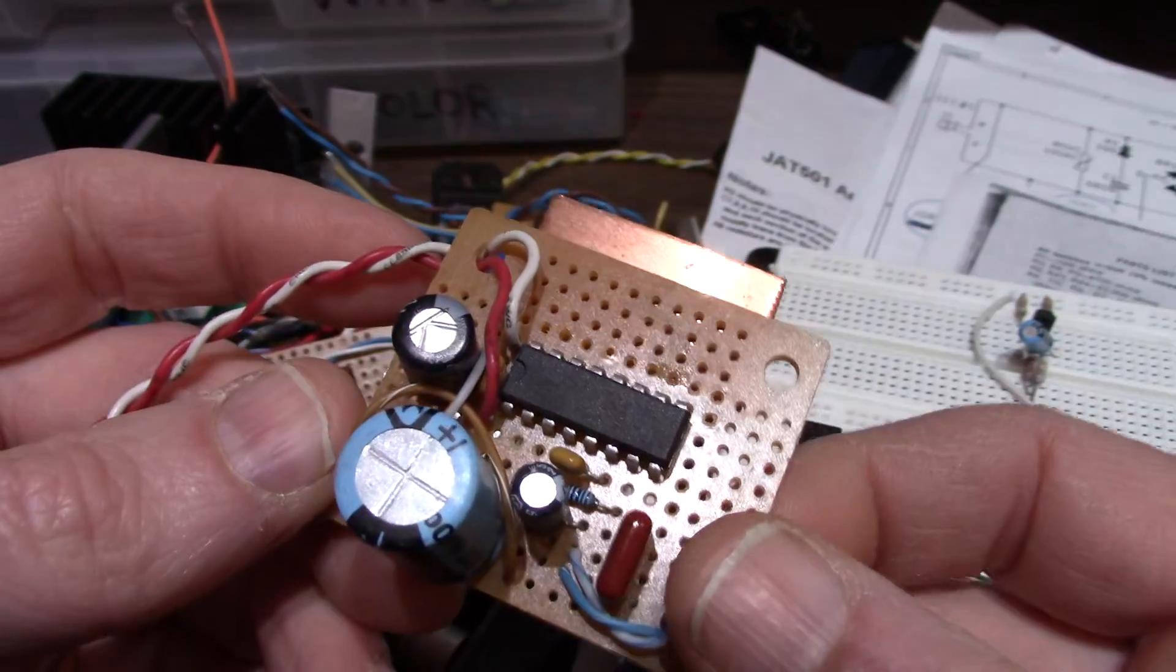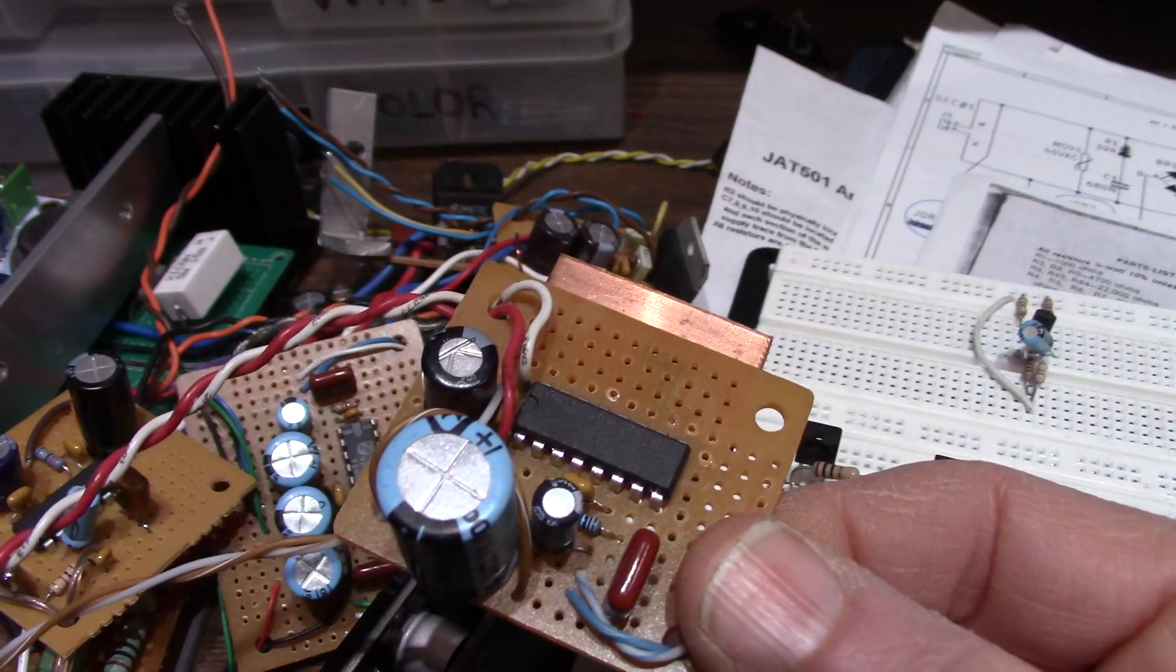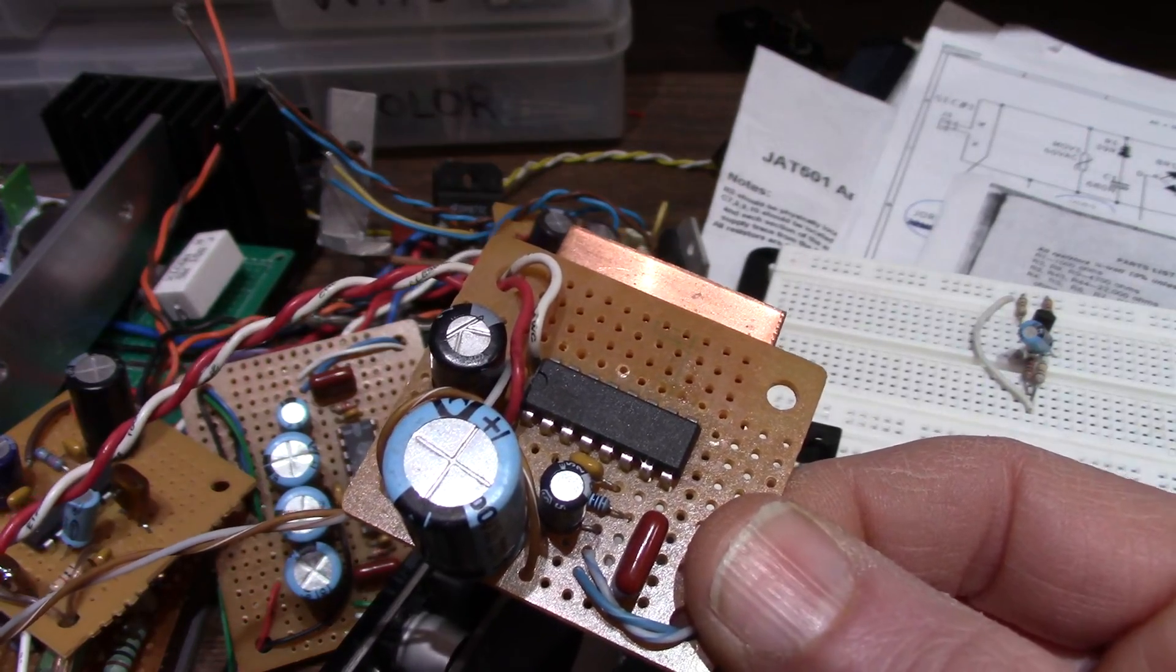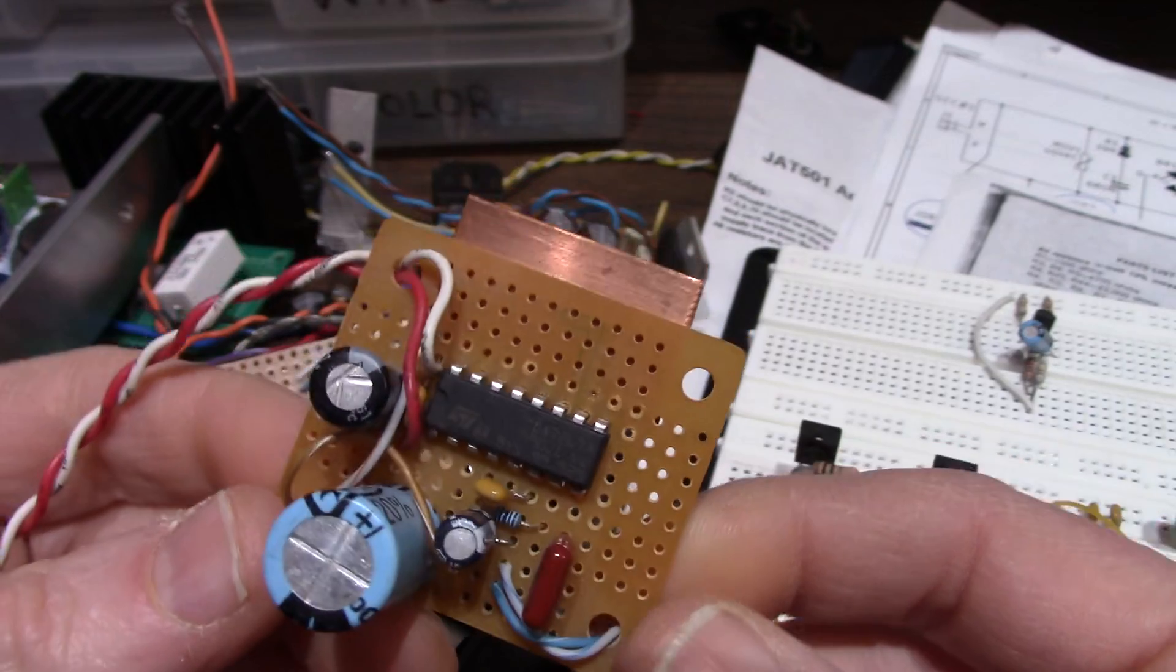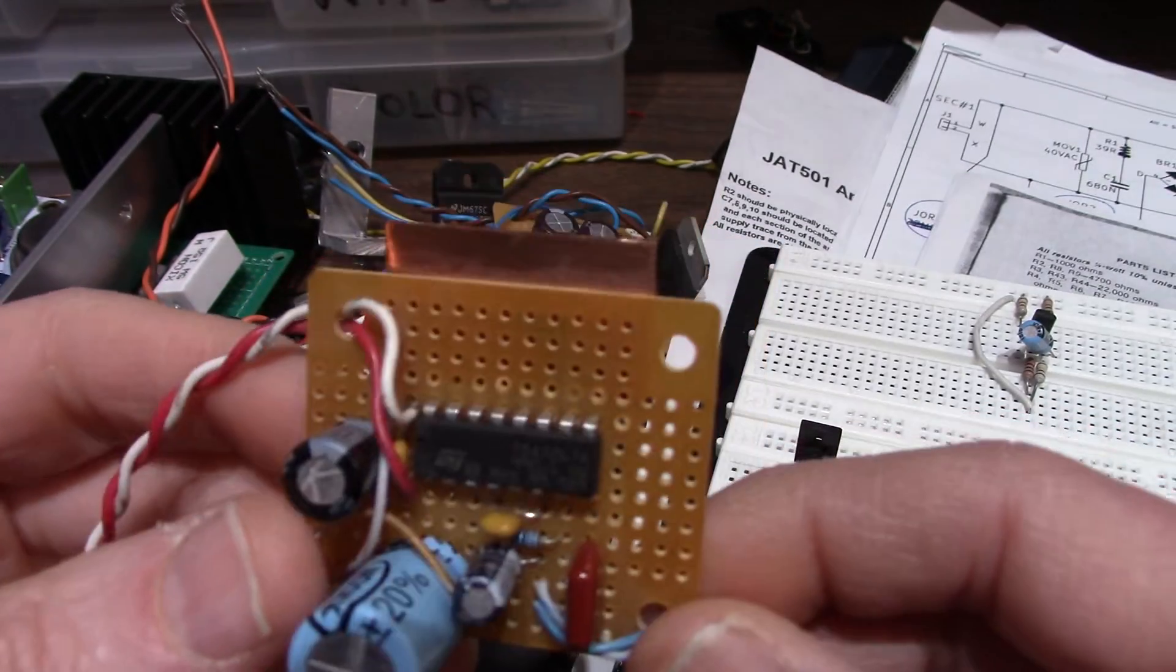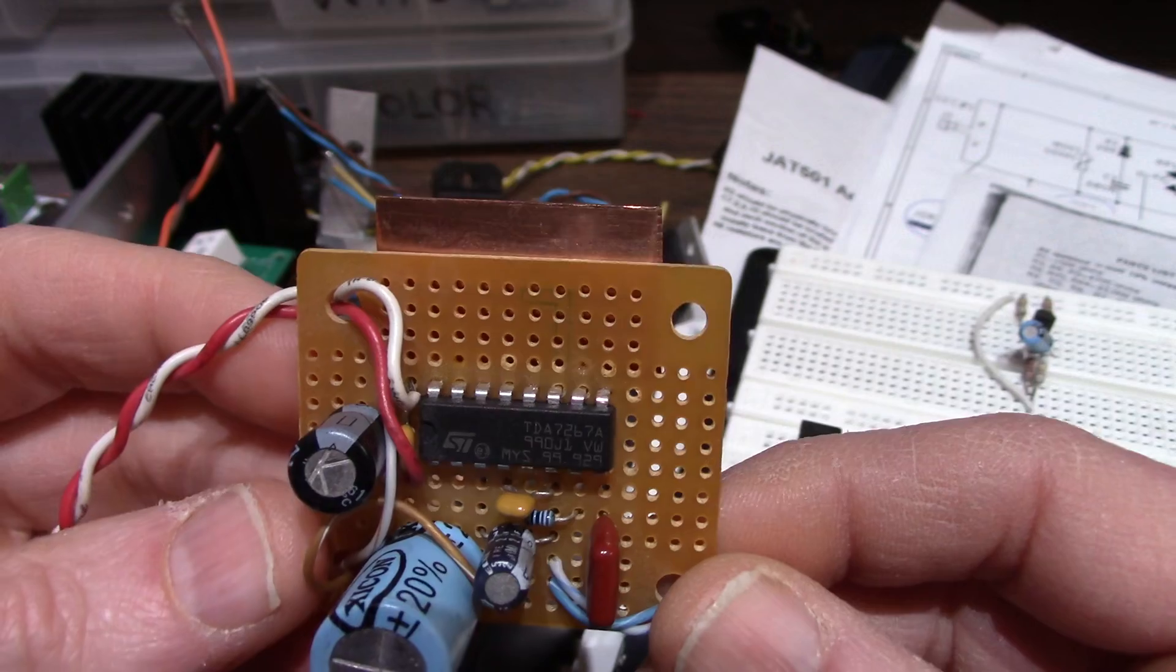Good output swing, can handle 4 ohm loads. If you remember at 9 volts, 4 ohm loads on the LM386 output power actually dropped below the 8 ohm measurements. And that's because the very limited current of the LM386. Well, this one doesn't have that problem.